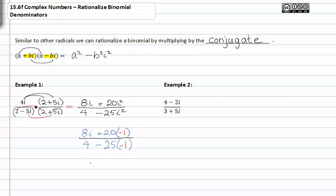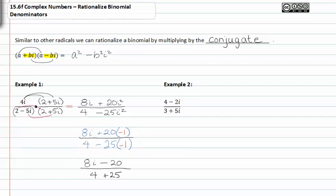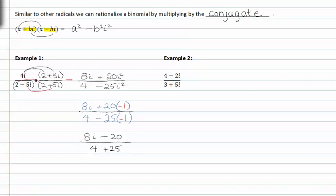We can easily simplify this further so that we don't even have multiple terms in the denominator anymore. Four plus twenty five will be what you get in the denominator which will simplify further. You will have eight i minus twenty all over twenty nine.